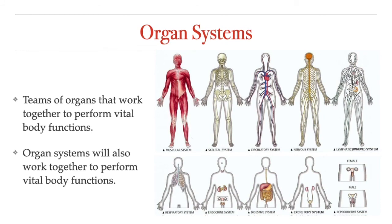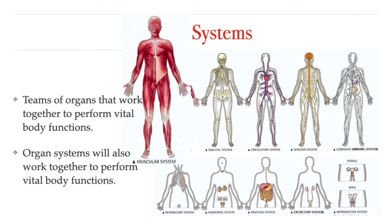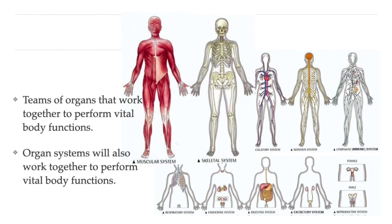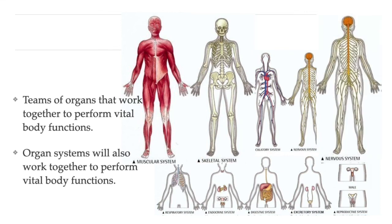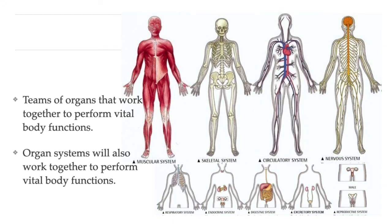We described organ systems as teams of organs that work together to perform vital functions in the body. But humans are complicated organisms, and one thing to keep in mind is that organ systems do not work in isolation — they work together to perform vital body functions. For example, if you wanted to move your arm up and down, you would use the arm muscles of your muscular system, but your muscles alone could not lift your arm. They need to be attached to the arm bones and shoulder joints of your skeletal system. You would also need your nervous system to send messages from your brain to your arm muscles, and those muscles need a constant blood supply to keep them full of the nutrients and oxygen they need to obtain energy.